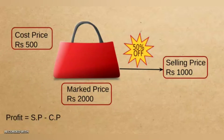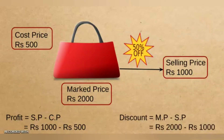The profit he obtained is SP minus CP, which is 1000 minus 500, giving rupees 500. You can also find the discount by finding the difference MP minus SP, which is rupees 2000 minus 1000, giving rupees 1000. So the discount given is 1000 rupees.